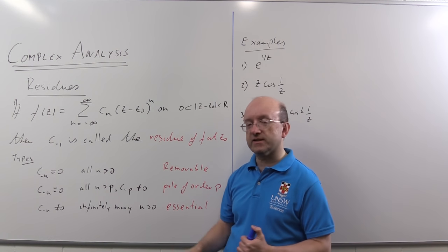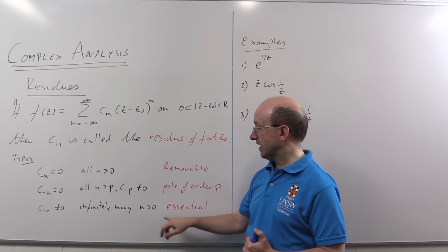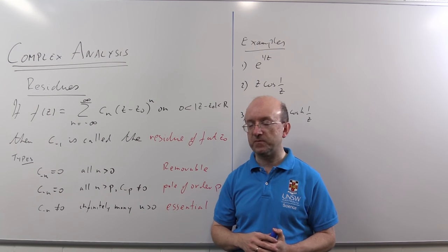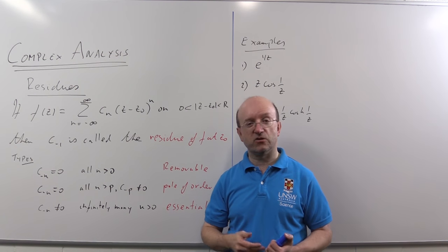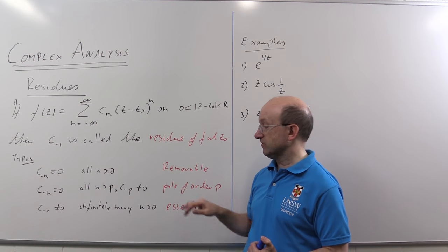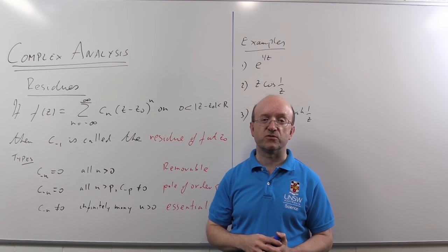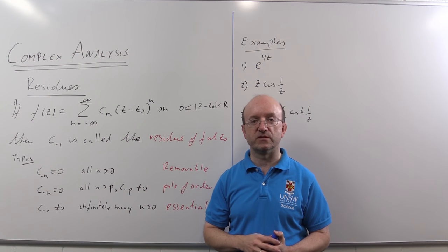The third case is where in fact infinitely many of these negative powers have nonzero coefficient and that's known as an essential singularity. Now the residue at an essential singularity you can only really find by writing down the series. You can do that for poles but as I said I'll show you some other methods in the other video and for removable the residue is always zero.